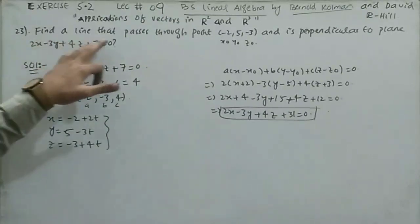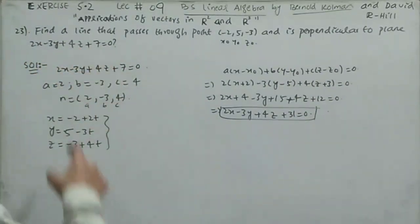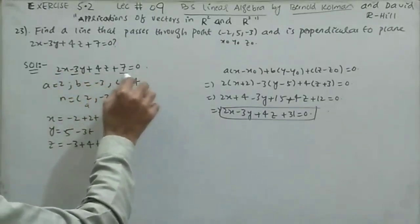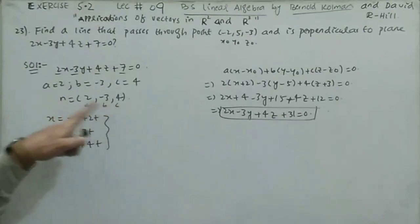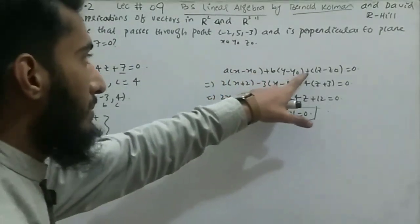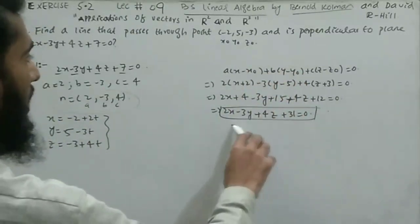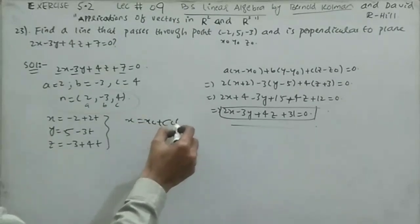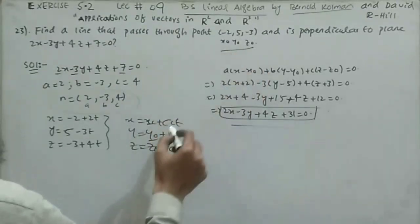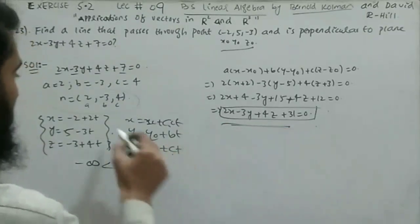Question 23: find the line passing through (-2, π, -3) and perpendicular to the plane 2x - 3y + 4z + 7 = 0. The plane gives a = 2, b = -3, c = 4, d = 7. The normal vector n = (2, -3, 4). Since the line is perpendicular to the plane, its direction is along n. The parametric equations are x = -2 + 2t, y = π - 3t, z = -3 + 4t, where -∞ < t < ∞.